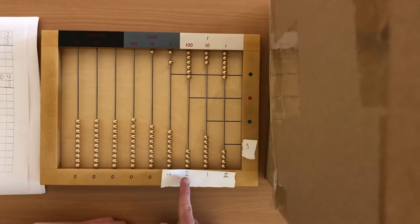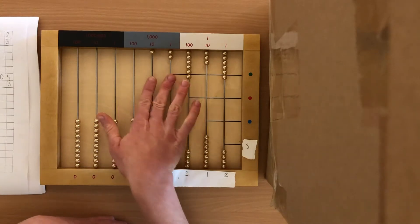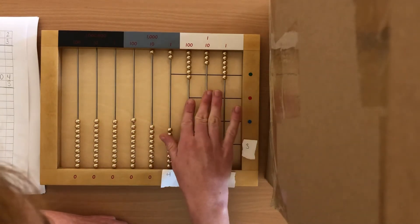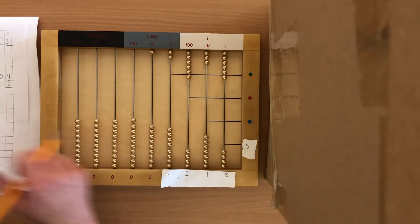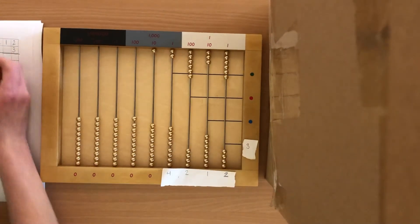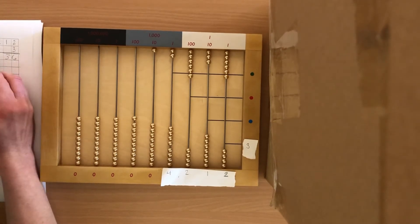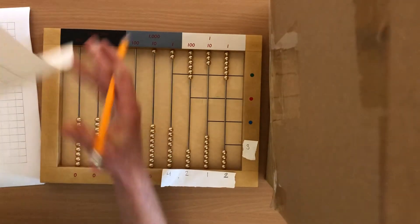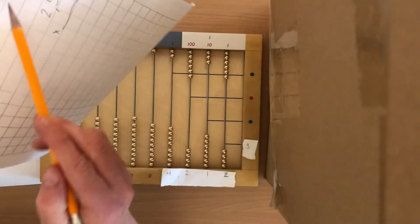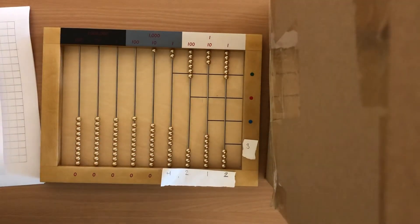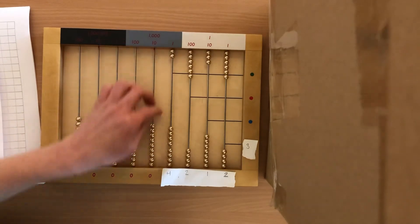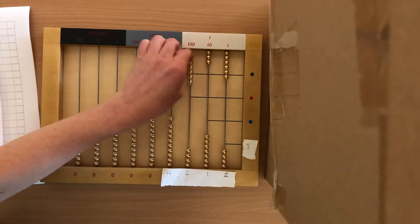All right, so we got 4,212 times 3 equals 12,636. Okay, so we'll record that. I'm gonna record 6, 3, 6, 2, and 1. Okay. All right, and now we're gonna do a next one.